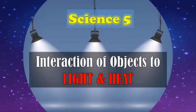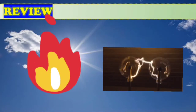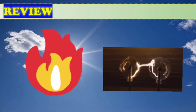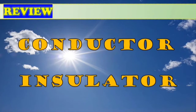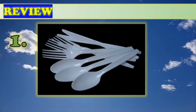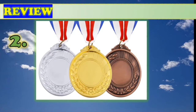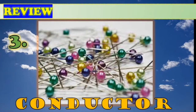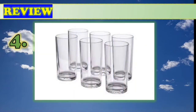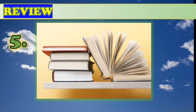Today, class, we are going to discuss about the interaction of objects to light and heat. Last meeting, we discussed about heat and electricity and how they react on certain materials or objects. This time, you are going to identify the pictures whether these materials are conductors of heat and electricity or an insulator. Number one — this is an insulator. Number two — this is a conductor. Next picture — this is a conductor. Number four — this is an insulator. And the last number — this is an insulator.